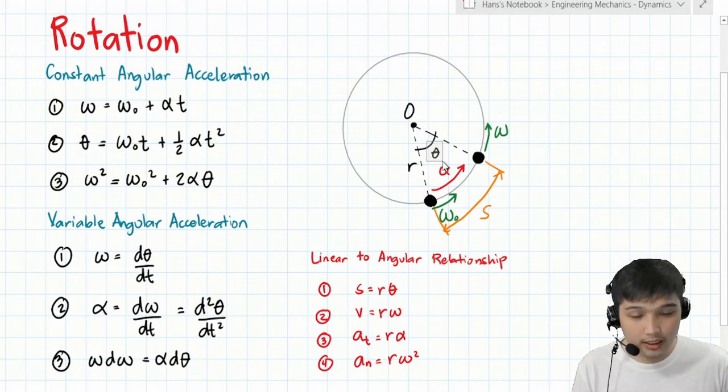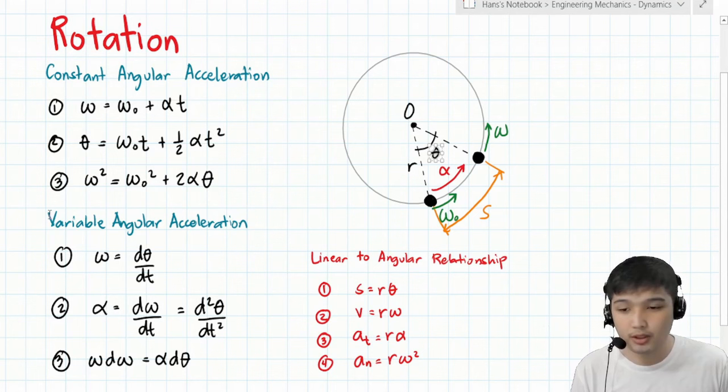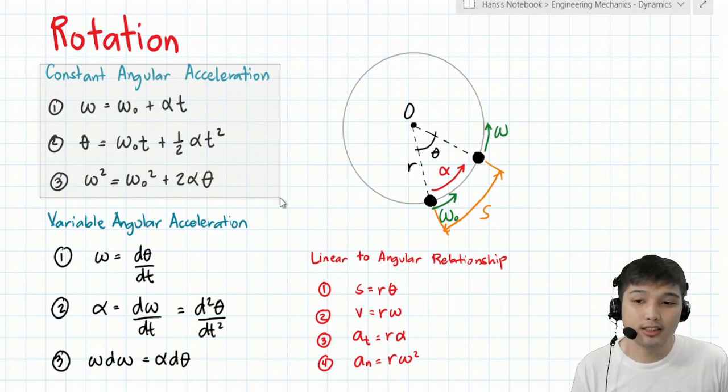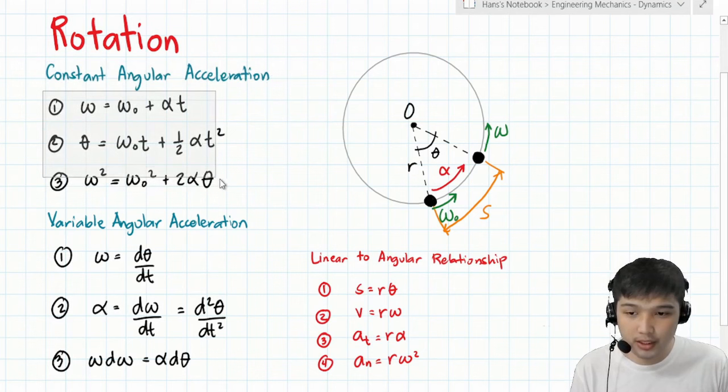We will be dealing with two types of rotational motion: one with constant angular acceleration and one with variable angular acceleration. If you look at the formulas, they are not new. As I said, they just gained the term 'angular' and the symbols were replaced. For constant angular acceleration, the three formulas are the same as the three formulas for rectilinear motion.